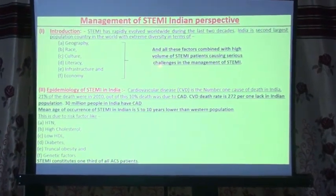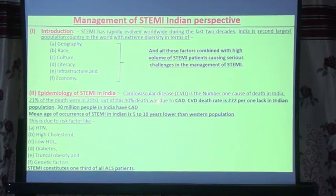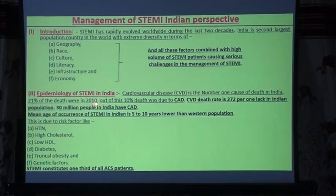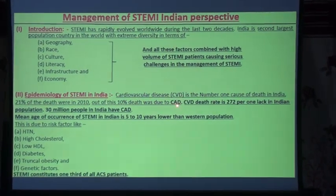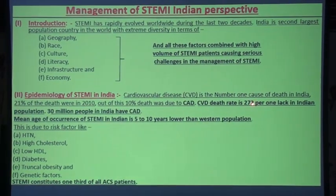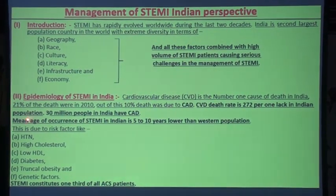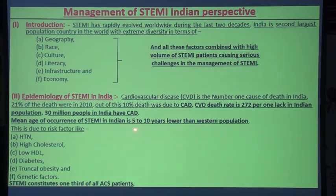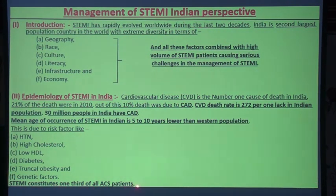Regarding the epidemiology of STEMI in India: cardiovascular disease is the number one cause of death in India. Twenty-one percent of deaths in 2010 — out of this, ten percent were due to coronary artery disease. The cardiovascular disease death rate is 272 per 100,000 in the Indian population. Thirty million people in India have coronary artery disease. The mean age of occurrence of STEMI in Indians is five to ten years lower than the Western population.